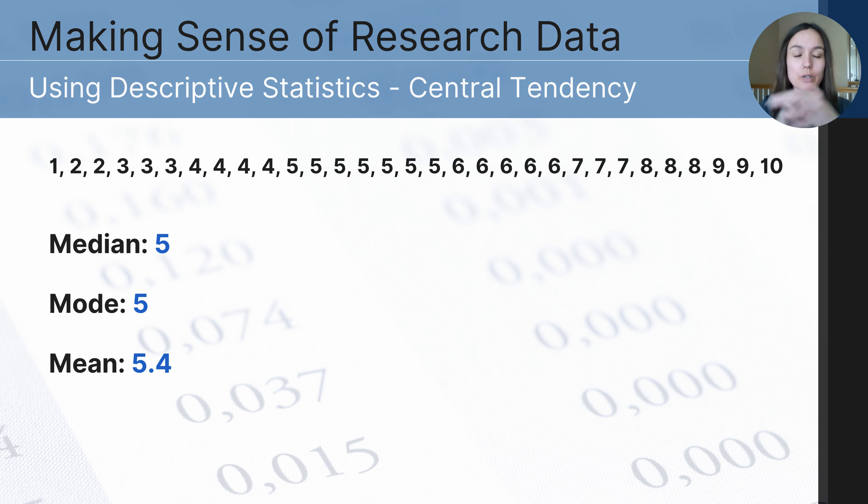So now you can see the data set is reordered so all of the numbers are in chronological order and now you can see that the median, the number that falls directly in the center of the data, is five.